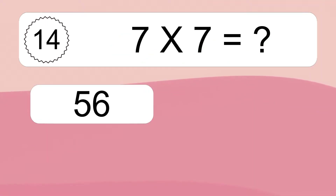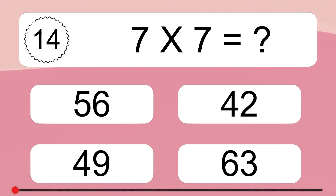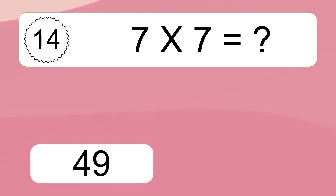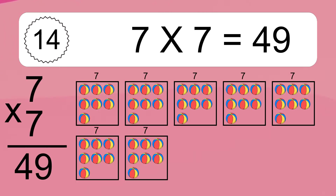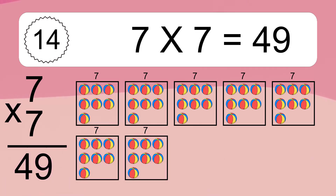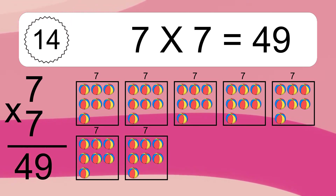7 times 7 equals what? 7 times 7 equals 49. We have 7 boxes and each box has 7 colorful balls inside. If you count all the balls in all the boxes together, you will have 7 times 7 balls. This equals 49 balls.